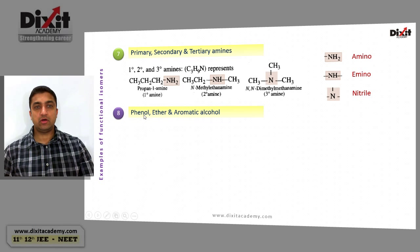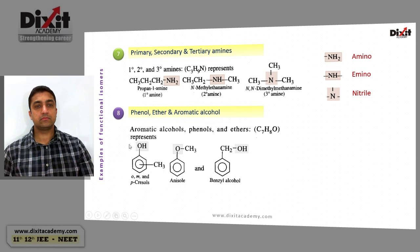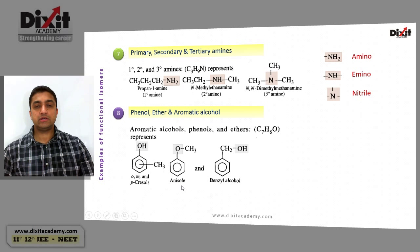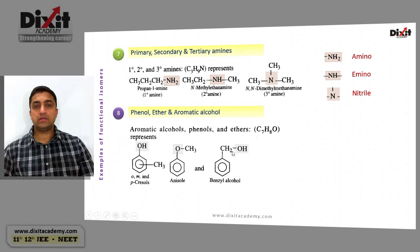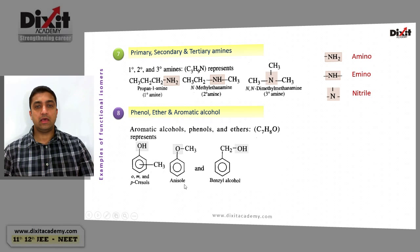Example 8: phenols, ethers, and aromatic alcohols. In phenols, the functional group is -OH directly bonded to an sp2 hybridized carbon of the aromatic ring. Anisole is an ether with C-O-C linkage. Benzyl alcohol is an alcohol with -OH bonded to an sp3 hybridized carbon. The molecular formula C7H8O represents ortho-, meta-, and para-cresol, anisole, and benzyl alcohol — they are functional isomers of each other.